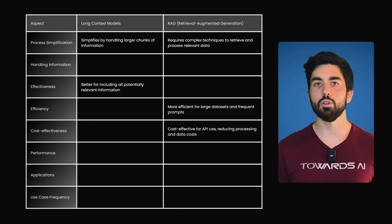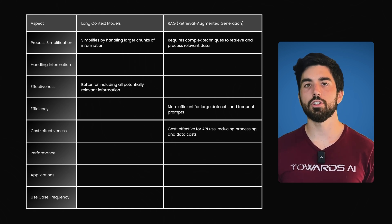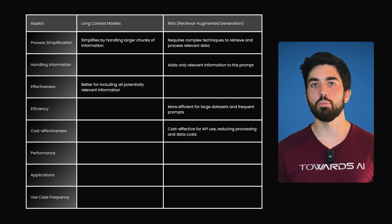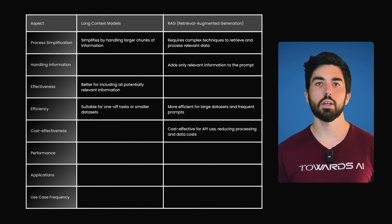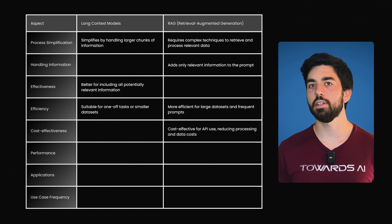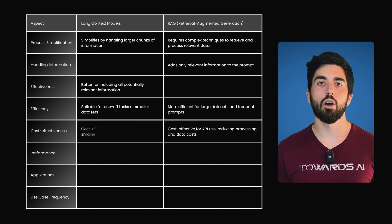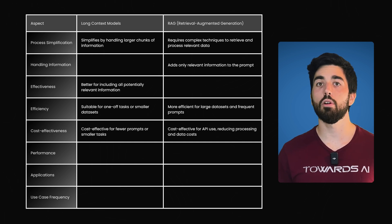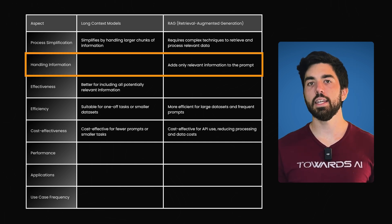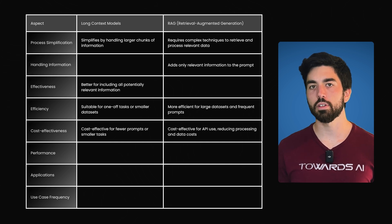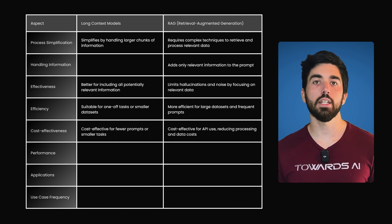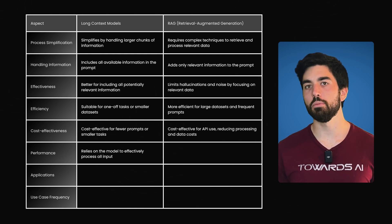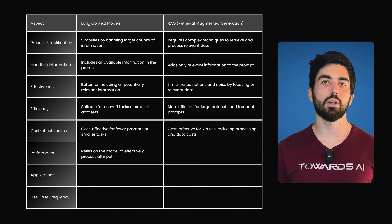RAG is particularly useful when using LLMs through APIs, as it's more efficient and cost-effective to retrieve and send only the most relevant information rather than processing vast amounts of text. Long context models may be preferable for one-off tasks with smaller datasets, like analyzing one or two PDFs, or when handling fewer prompts per hour. The key difference lies in how information is added to the prompt: RAG adds only relevant information, potentially limiting hallucinations and noise, while long context models include all available information, placing more responsibility on the LLM to process it effectively.